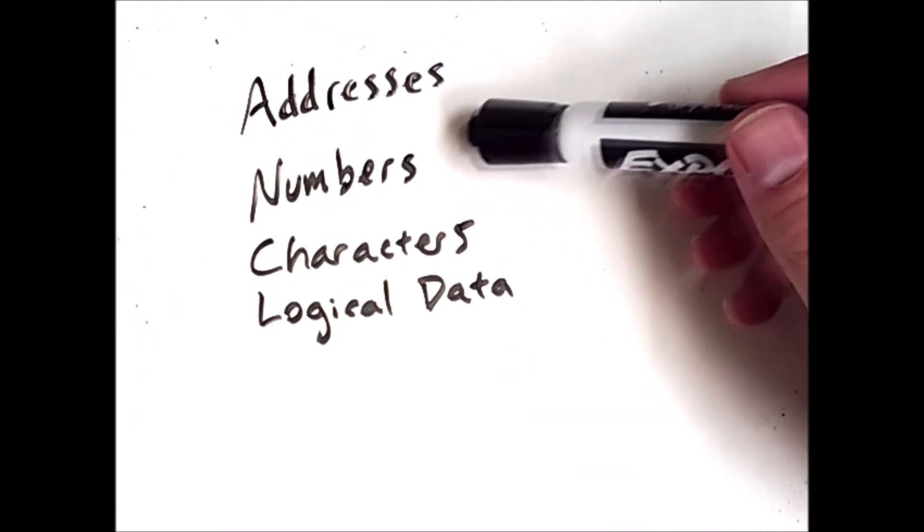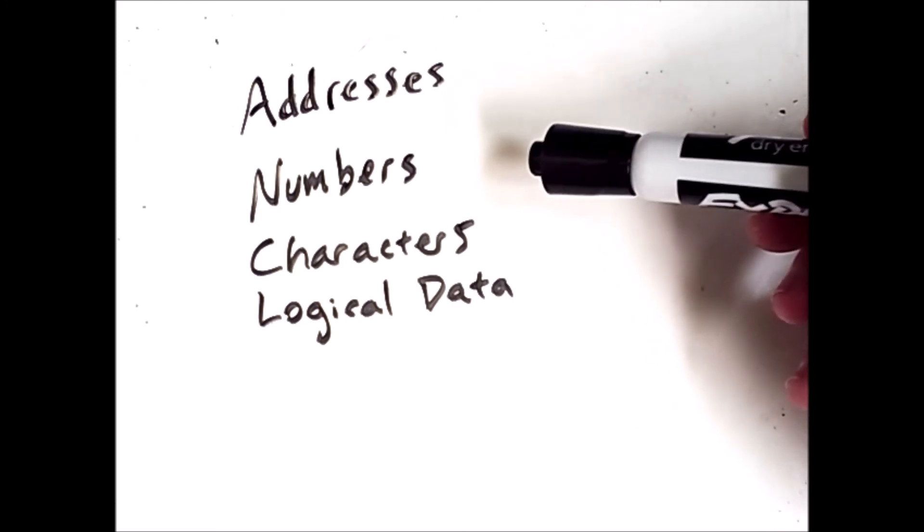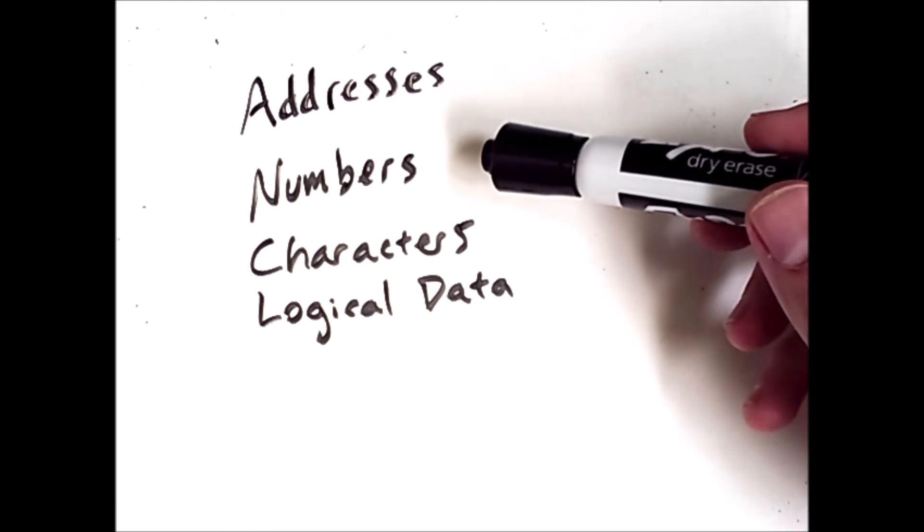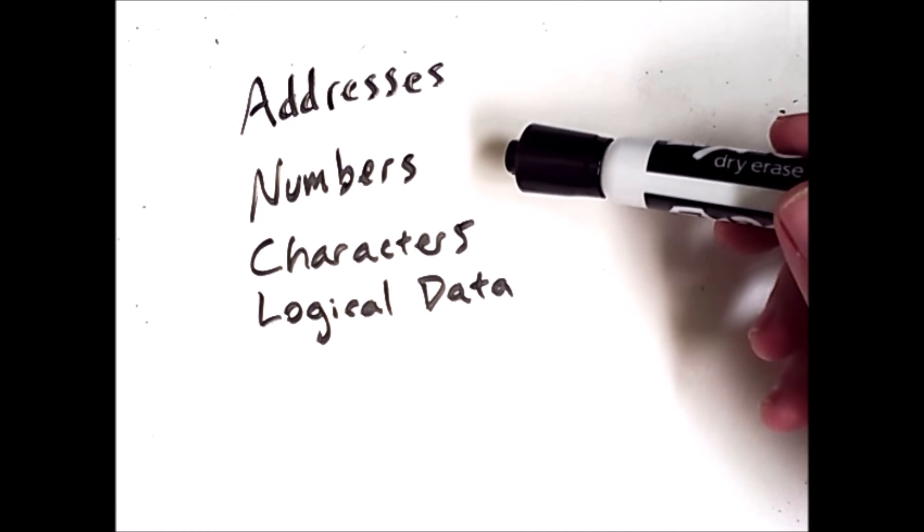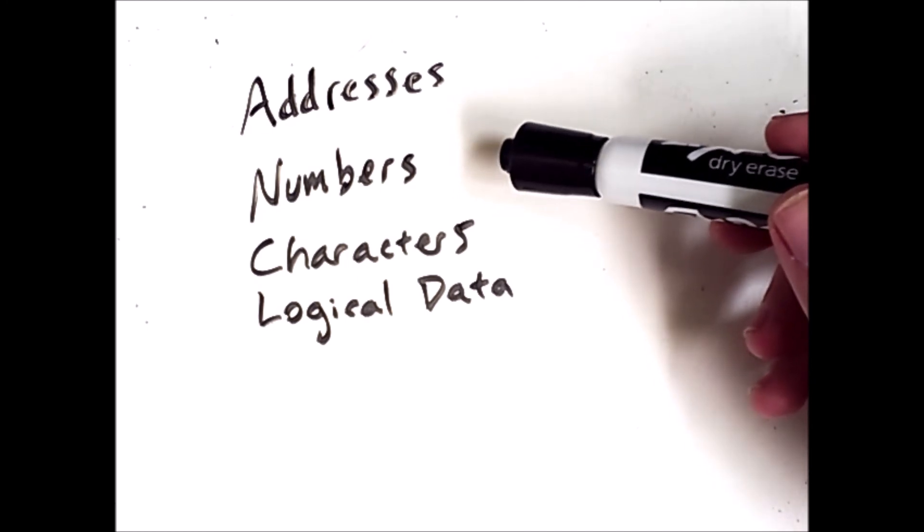Numbers can be signed or unsigned, but they could also be either decimal or a floating point or something called packed decimal, which we'll see at some other time.